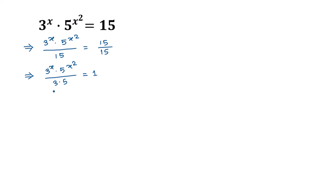So 3 to the power x times 5 to the power x squared, divided by 3 times 5, can be written as 3 to the power x divided by 3 — which is 3 to the power 1 — times 5 to the power x squared divided by 5 — which is 5 to the power 1 — and this is equal to 1.